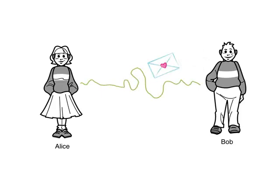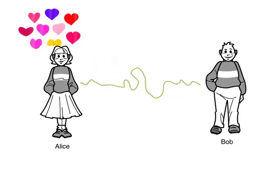He then sends the message by electronic means, such as email, text messaging, and so forth. The message travels over the Internet until it reaches Alice. When she gets it, she reads it. Life is wonderful for both of them.